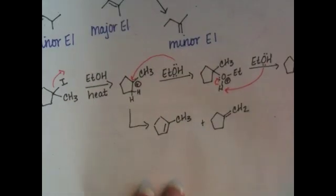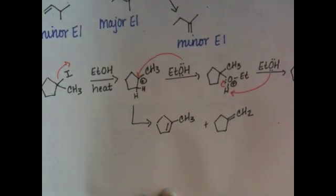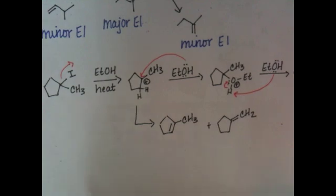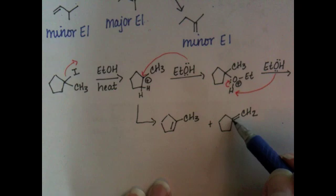Of these two, we want to identify the major and the minor. The major E1 and the minor E1. And again, it has to do with how many R groups are on your alkene. This alkene has one, two, three. This alkene has one, two.